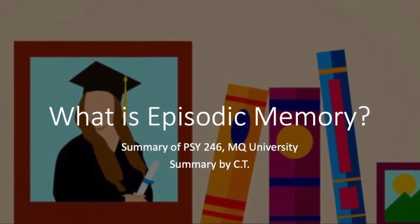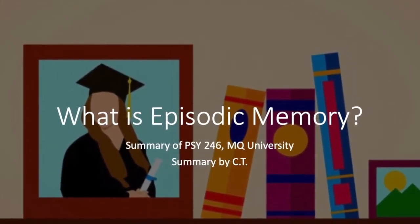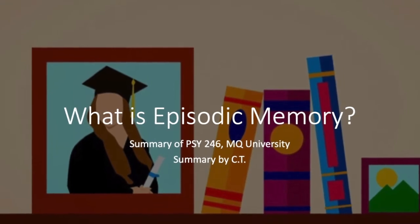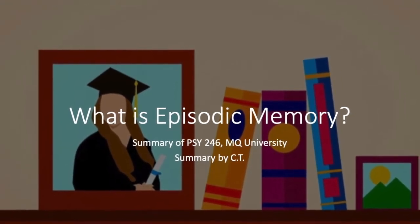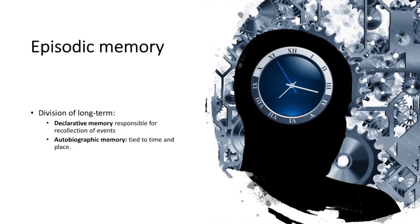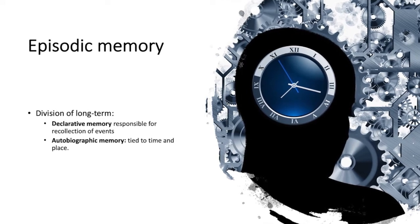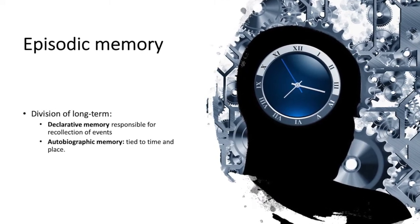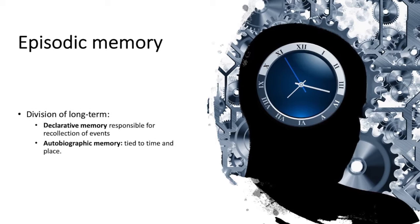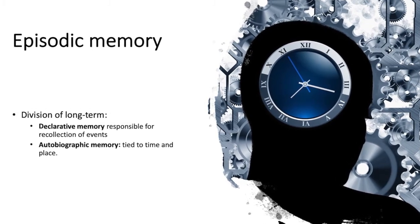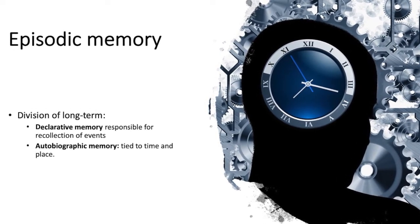What is Episodic Memory? This is a summary of the PSY246 course from Macquarie University. Episodic memory is defined as the division of long-term declarative memory that is responsible for the recollection of events as well as autobiographic memory, which is tied to time and place.